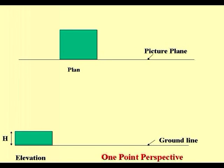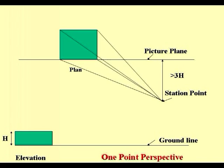Elevation normally is on the ground line. On the ground line, the elevation has, in this case, a height H. We will be standing somewhere at a distance of three times the height and that is the station point.